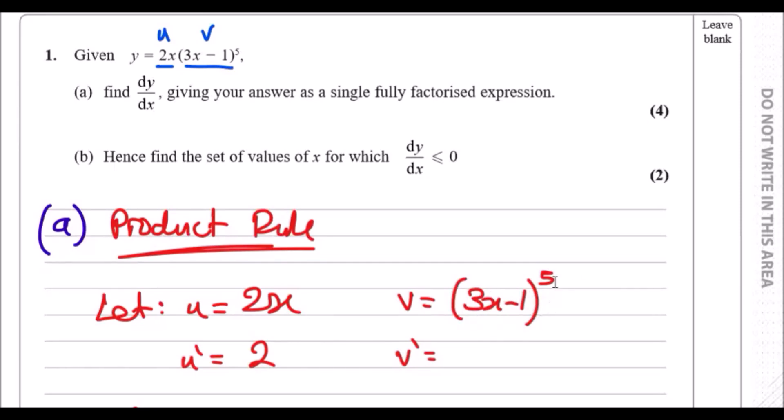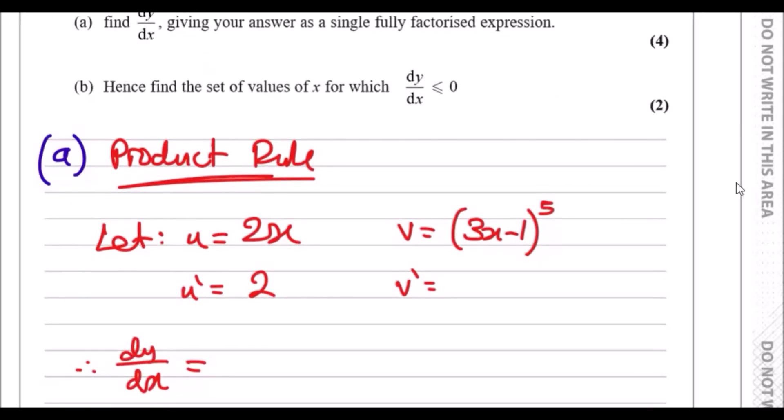Differentiating 2x gives you 2. Differentiating (3x-1)^5: drop the 5 down, differentiate the inside of the bracket. Differentiating 3x-1 gives 3, so you have 5 times 3 which equals 15. Copy the expression and drop the power down by one. This is called the chain rule.